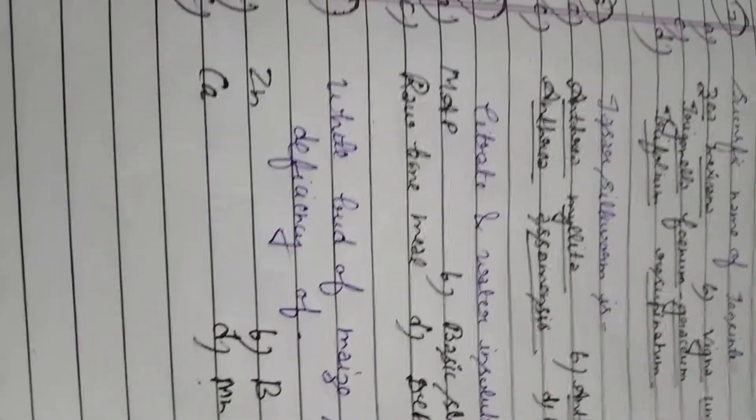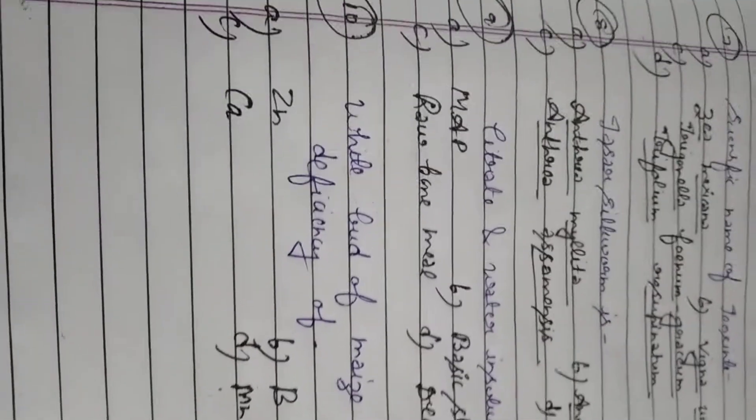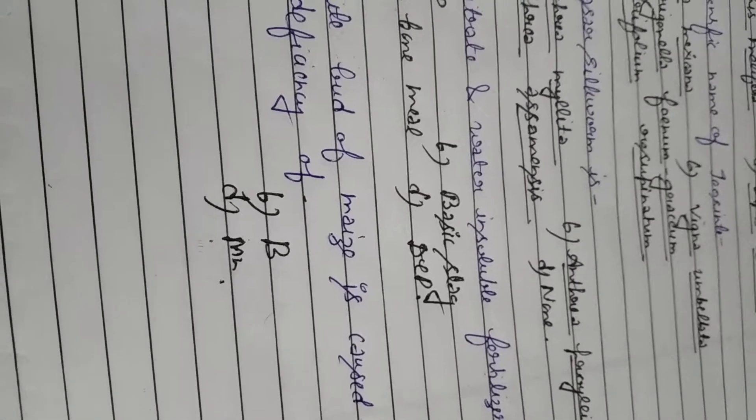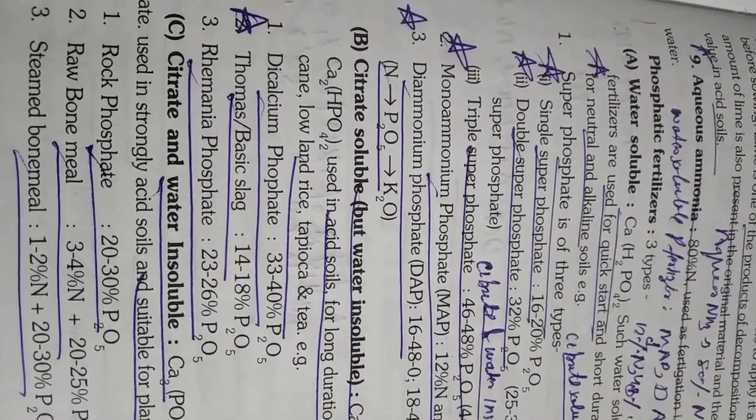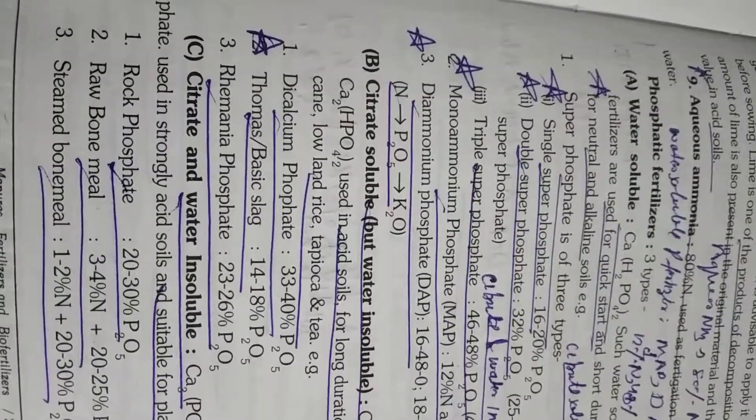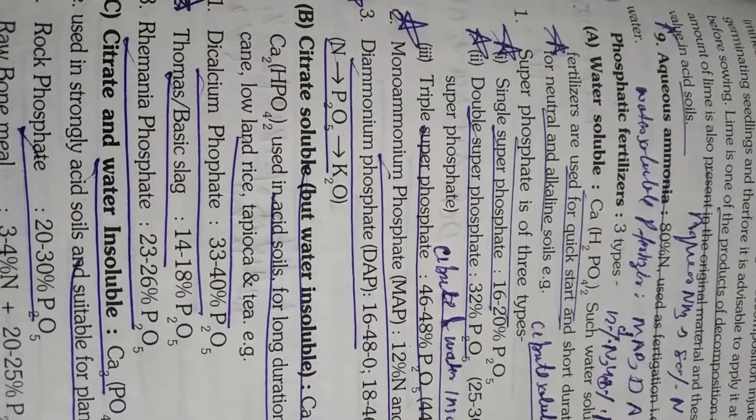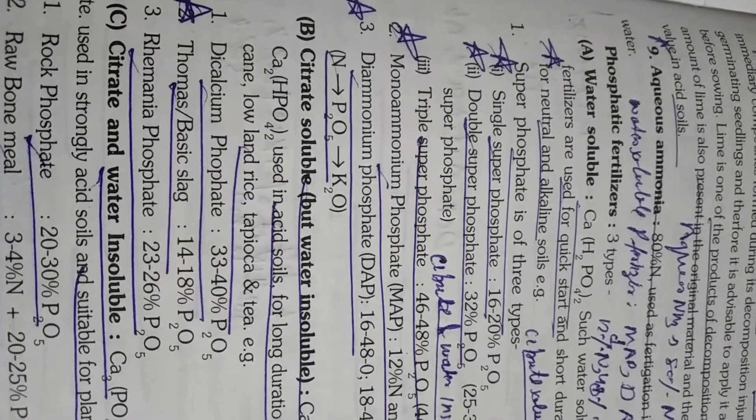Question number 9 students. Citrate and water insoluble fertilizer. Citrate and water insoluble fertilizer you have to tell. Students option A is MAP mono ammonium phosphate, Option B is basic slag, Option C is raw bone meal, Option D is DCP. So what is the citrate and water insoluble fertilizer in them. Students I also told you many times. Some phosphatic fertilizers are water soluble. Some are citrate soluble and water insoluble. And some are citrate and water insoluble both. So water soluble fertilizers are your single super phosphate, double super phosphate, triple super phosphate, mono ammonium phosphate, diammonium phosphate. These all are water soluble fertilizers.